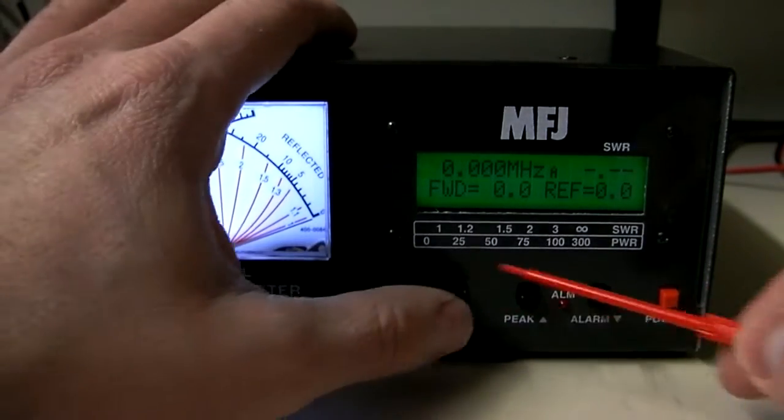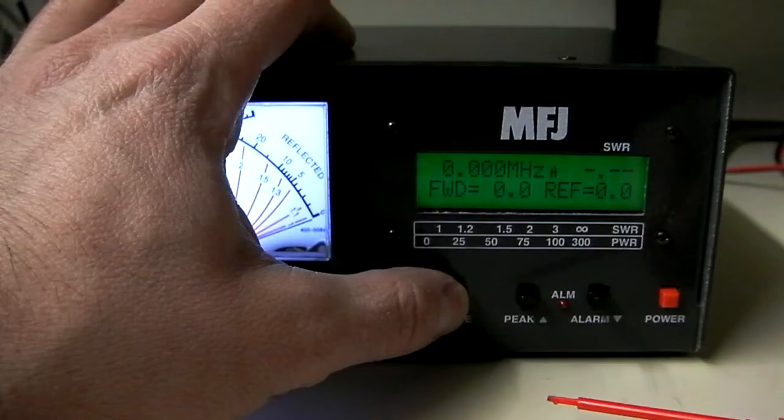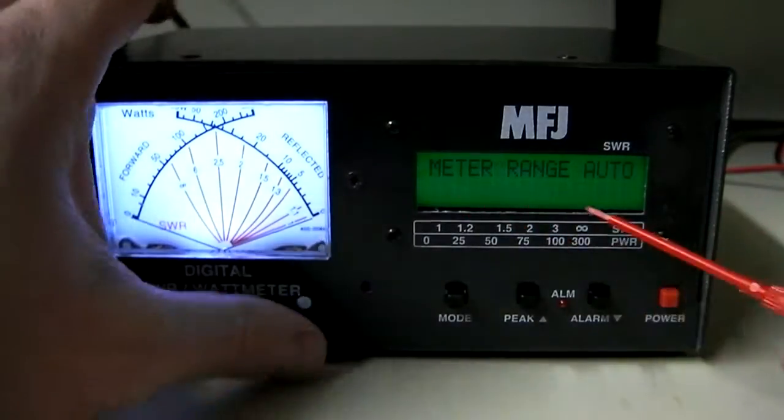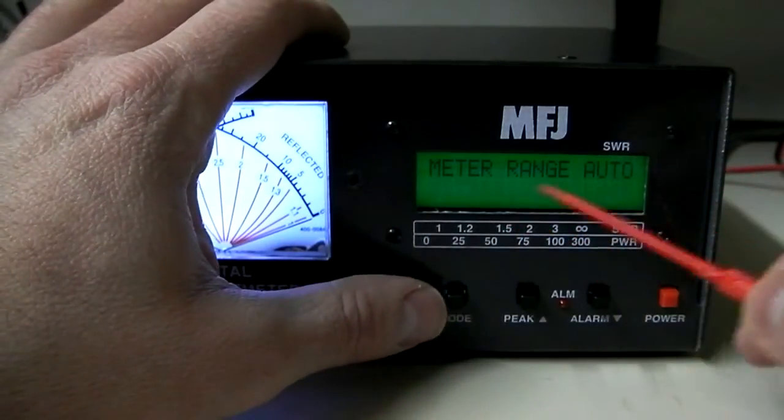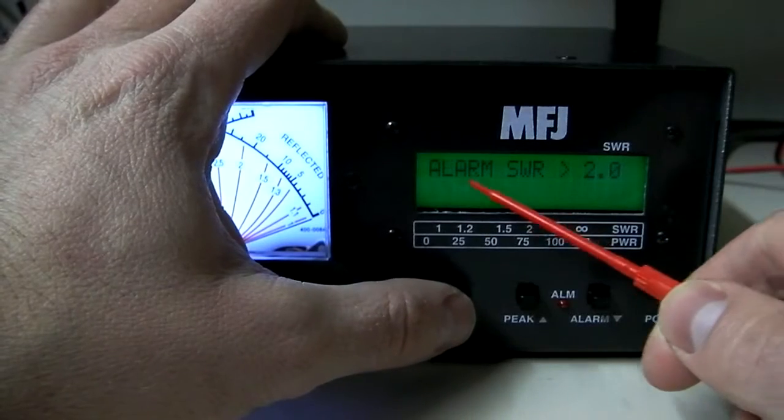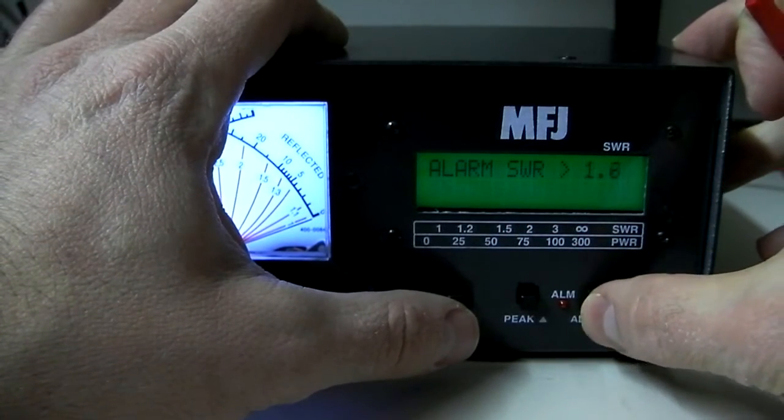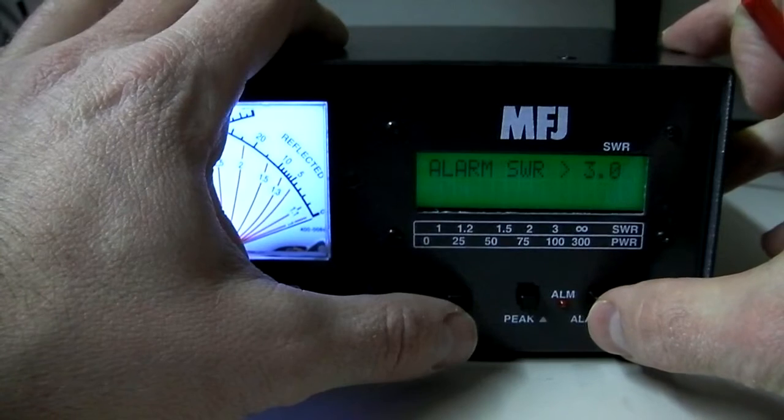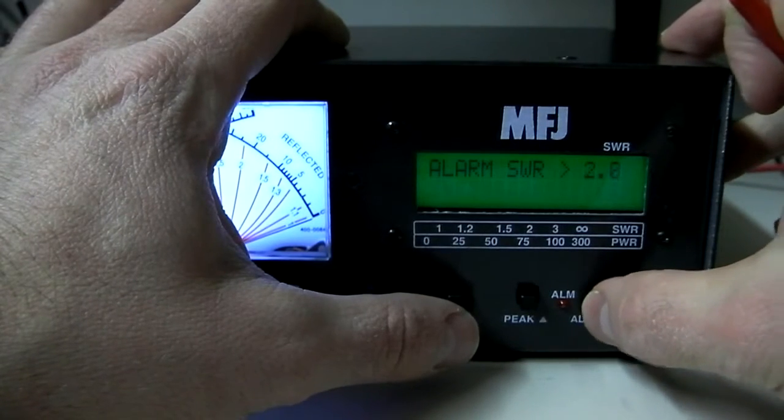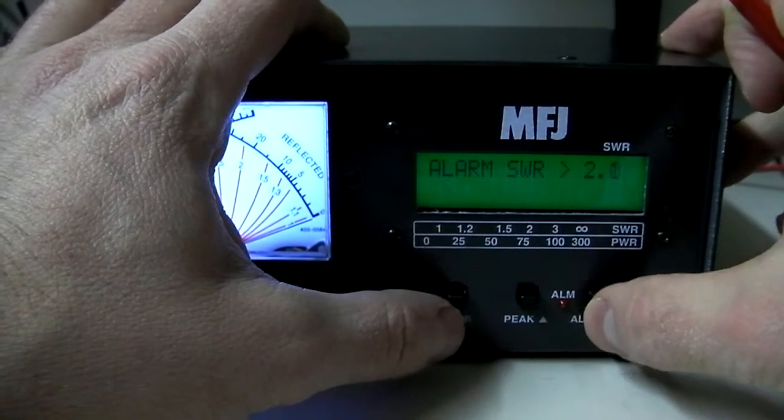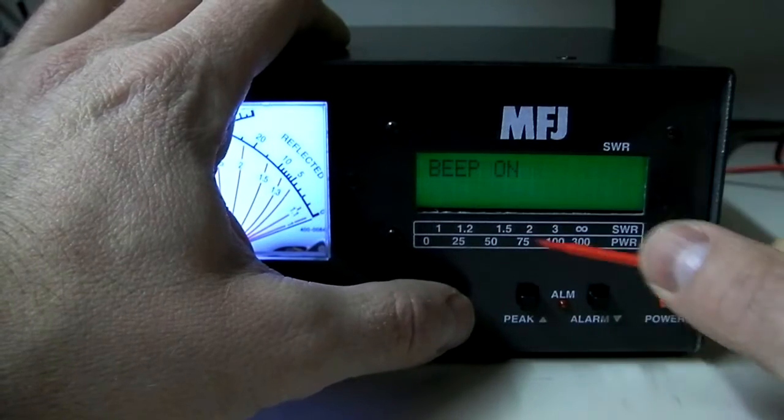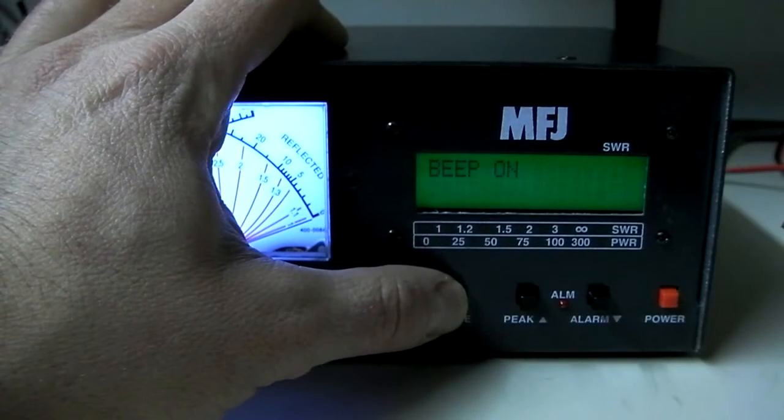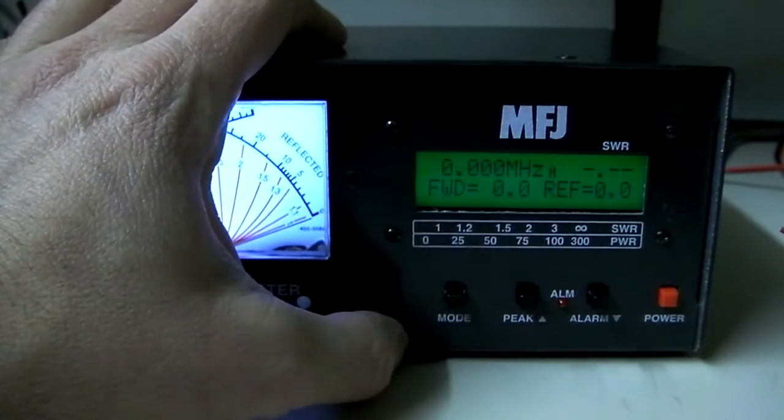You can go into the mode, hold this in, and it will take you into these options. So right now the meter's set up to auto range. The alarm can be set. So we can set it to 1.5, or we can set it up to a 3 and anything in between. We can set it to 2 here, and the beep is on. That's the beep when we're changing our function or pushing the buttons, and now we're back to our main menu.